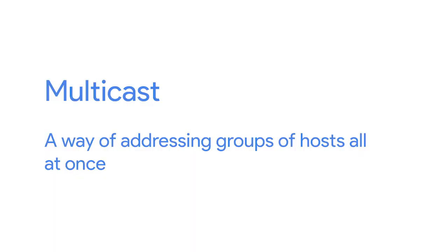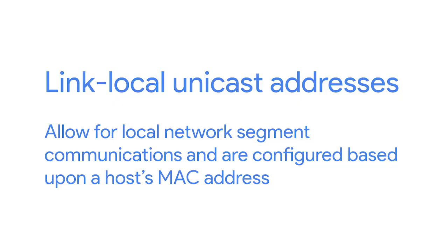The IPv6 address space has several other reserved address ranges. Any address that begins with ff00:: is used for multicast — a way of addressing groups of hosts all at once. Addresses beginning with fe80:: are used for link local unicast, which allow for local network segment communications and are configured based upon a host's MAC address. The link local addresses are used by an IPv6 host to receive their network configuration, similar to how DHCP works. The host's MAC address is run through an algorithm to turn it from a 48-bit number into a unique 64-bit number, which is then inserted into the address's host ID.